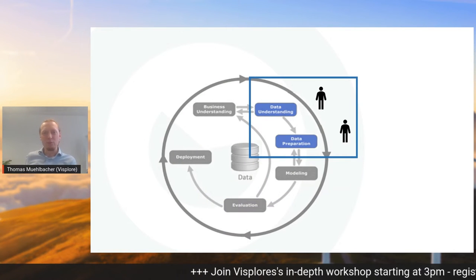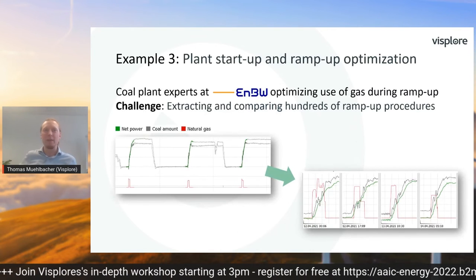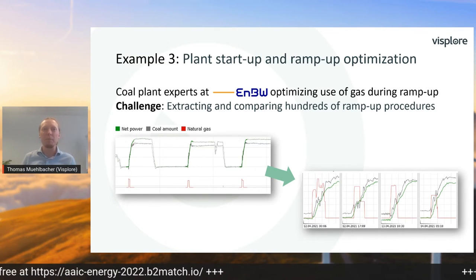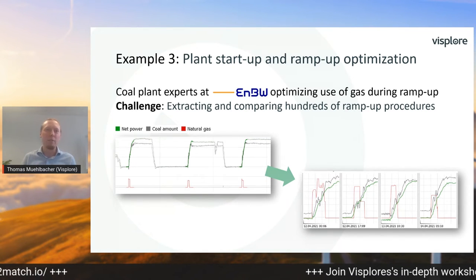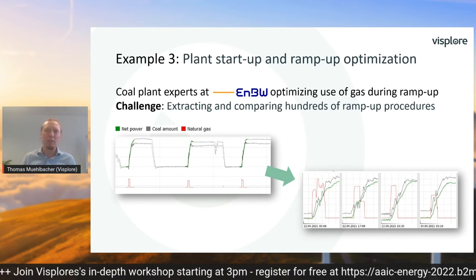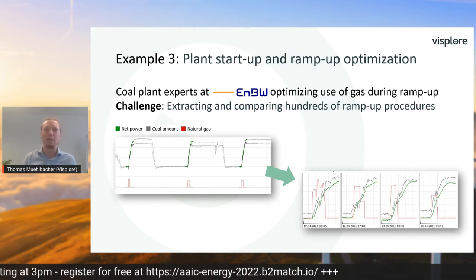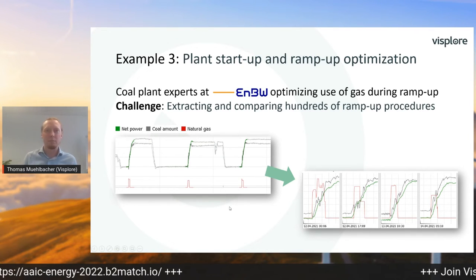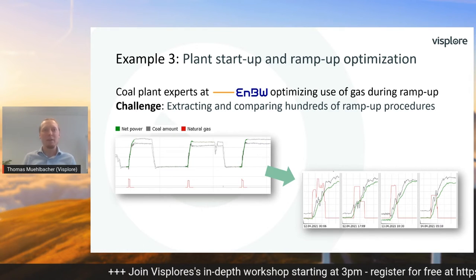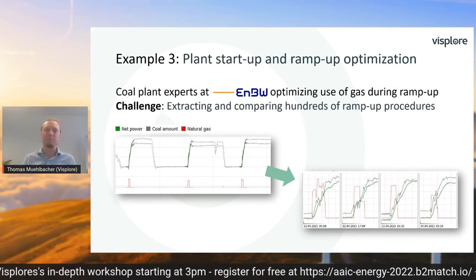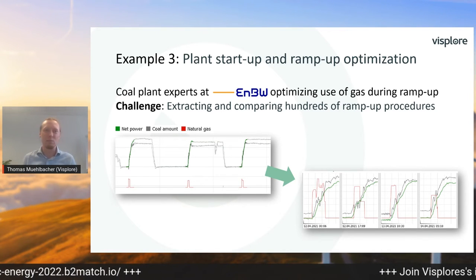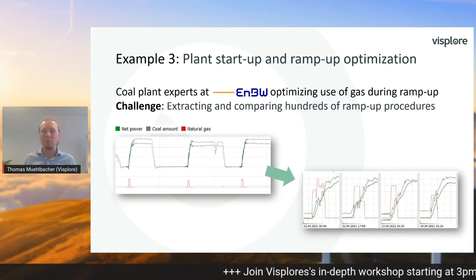The final example refers to data understanding and preparation driven by humans. It is from Energie Baden-Württemberg and is about optimizing the ramp-up procedures of a coal power plant. Ramp-up means that power production is increased to a higher level by the operators of the plant. With the increasing share of renewables and more dynamic grids, it's often necessary to redispatch power production by ramping up a coal plant. Ideally this is done without using more fuel than necessary, especially gas. The problem is such power plants are highly complex with many interdependencies, and some constraints are imposed by authorities, so optimizing this needs a lot of care and manual work by domain experts — labeling ramp-ups, inspecting them, comparing KPIs. In this use case, the human is not just in the loop, but actually in the driver's seat.